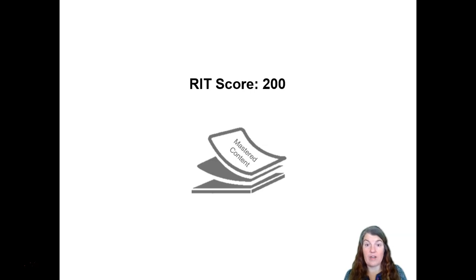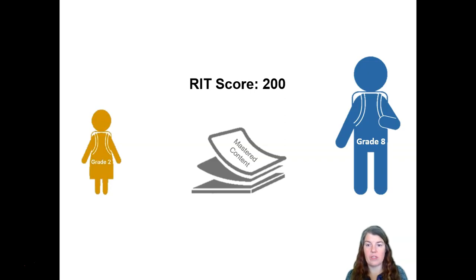A RIT score is a RIT score — it doesn't matter what grade you're in. So if we had a second grader who has a RIT score of 200, this is her pile of mastered content. Likewise, if we had an eighth grader with a RIT score of 200, this would be his pile of mastered content. So a RIT score of 200 from a second grader and an eighth grader means that these two students have about the same pile of mastered content. We know a second grader and an eighth grader who know about the same amount of math — but these are very different students. So how can we begin to contextualize this? How can we begin to make sense of how these students are different?